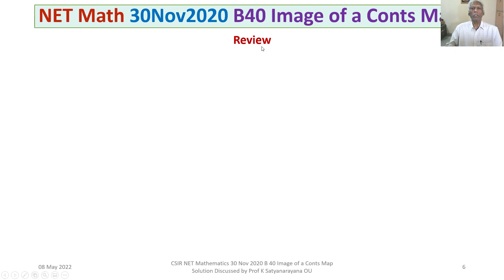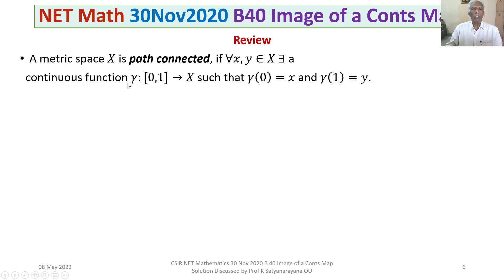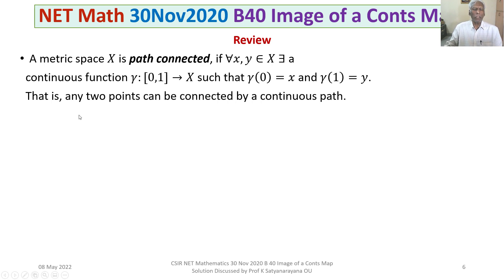Let's review some results we know. A metric space X is said to be path-connected if for all x, y belonging to X, there exists a continuous function gamma from the closed interval [0,1] to X such that gamma(0) = x and gamma(1) = y. That is, a metric space X is path-connected if any two points in X can be connected by a continuous path that lies entirely in X.